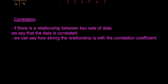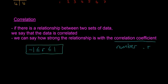We can say how strong the relationship is with the correlation coefficient. That's a fancy word but it basically just is a number that says how strong the relationship is. This number is represented by R generally, the letter R. And it has to be between minus one and plus one. So that's the correlation coefficient.